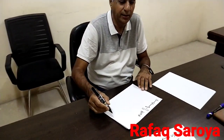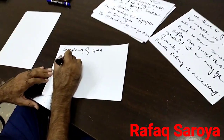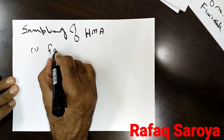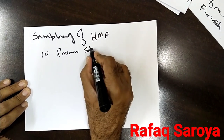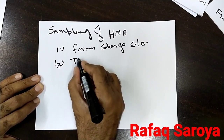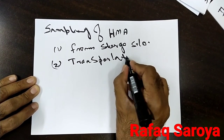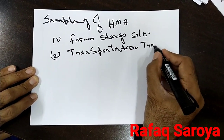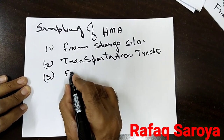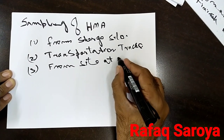Next, we are going to start the sampling of Hot Mix Asphalt (HMA). Keep one thing in mind: sampling can be from a storage silo, from a transportation truck, or from the site at the hopper.